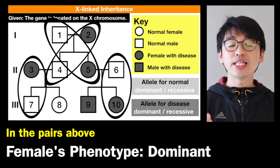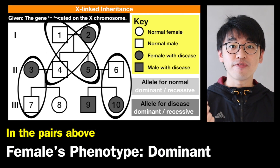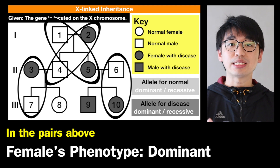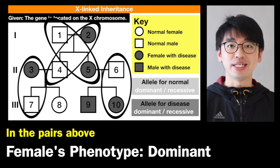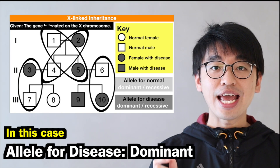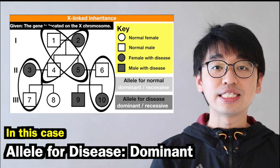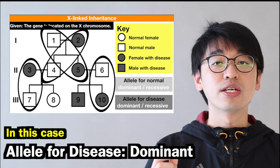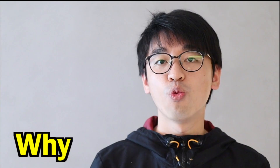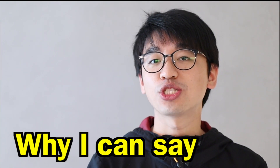Using these pairs, we can quickly identify which allele is dominant or recessive. It is always the phenotype of the females in these pairs that is dominant. In this case, the allele for disease is dominant.